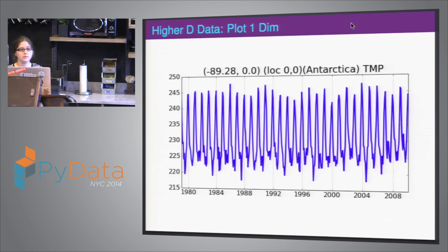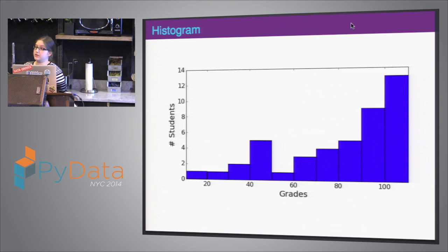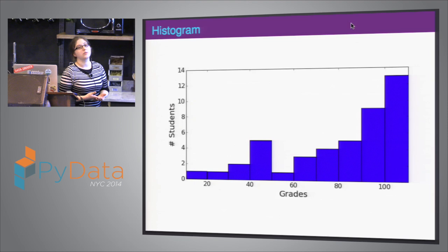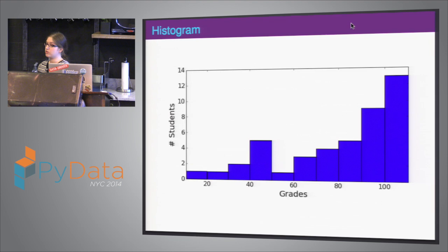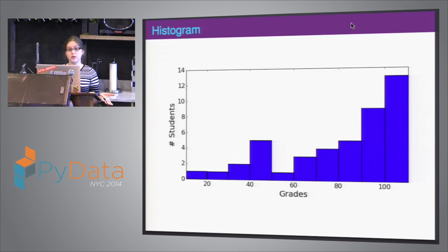We'll also want a histogram. Histograms are your best friend. What if I wanted to apply a shiny model to this? The data is not Gaussian. Half the models we use are Gaussian. So if you haven't checked that your data is Gaussian before applying your model to it, there's no reliability that your results are correct. So you always want a histogram.